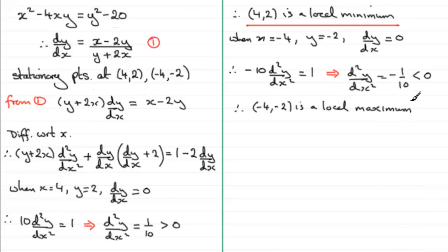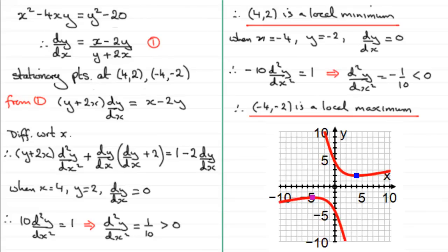We can verify this against the graph — not that you'd necessarily need to draw it — but you can see the local minimum at (4, 2) and the local maximum at (−4, −2) confirmed visually. This gives you an idea of how to apply the second differential method when working with implicit equations. That brings us to the end of this tutorial.